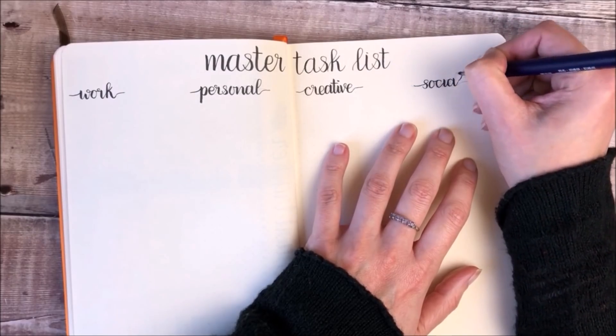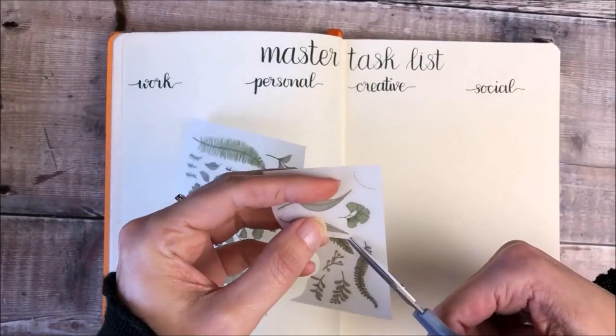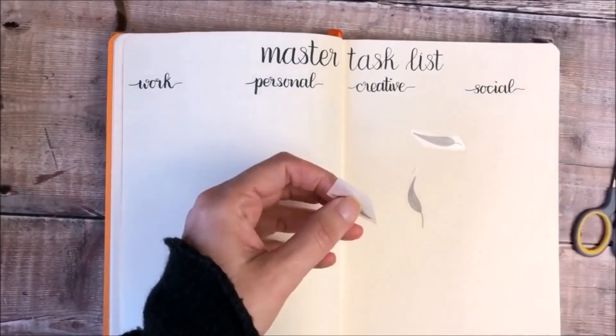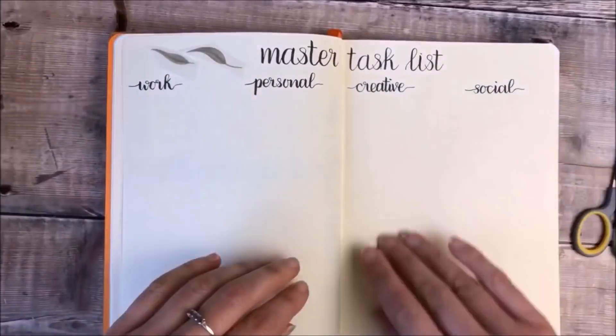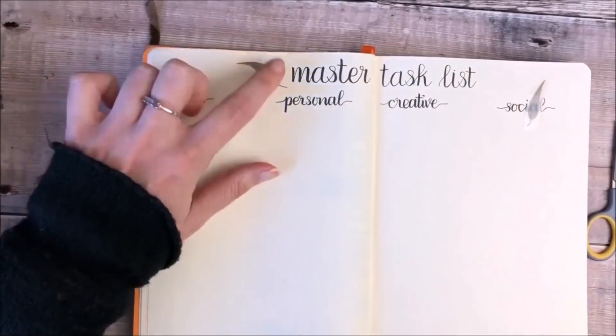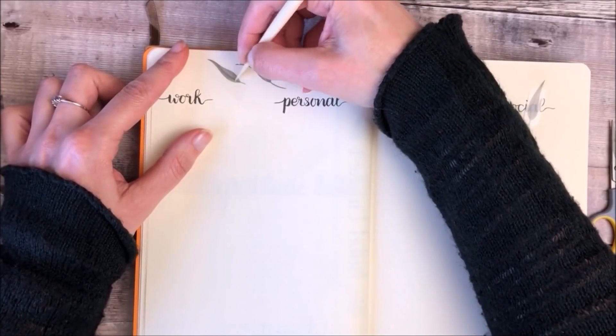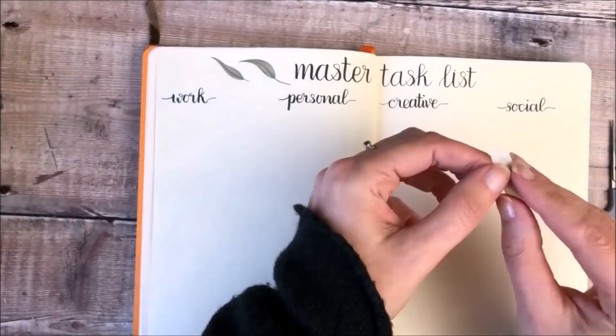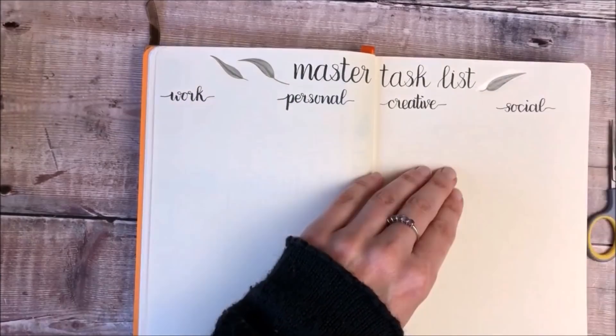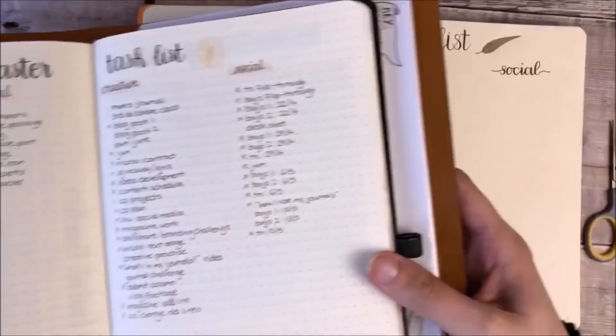I'm still using that same Tombow Fudenosuke brush pen and I'm going to add some more transfer stickers for decoration. I can definitely see these becoming a new obsession for me. They just look so nice because once you've taken that clear plastic off the top there's no sheen at all. This is how my task list looks part way through May.